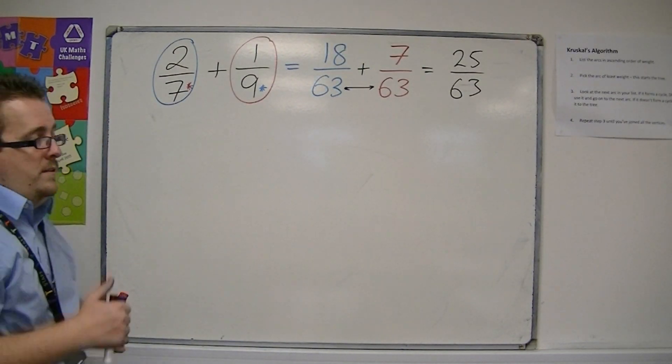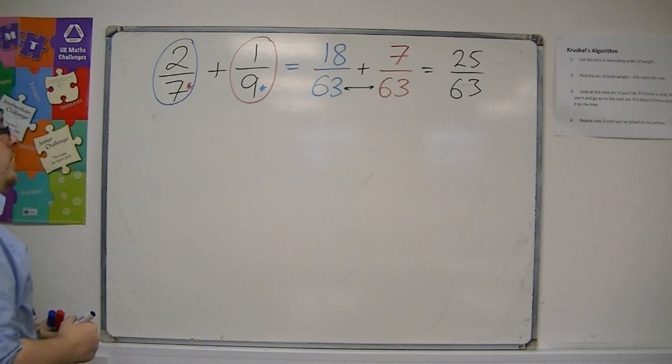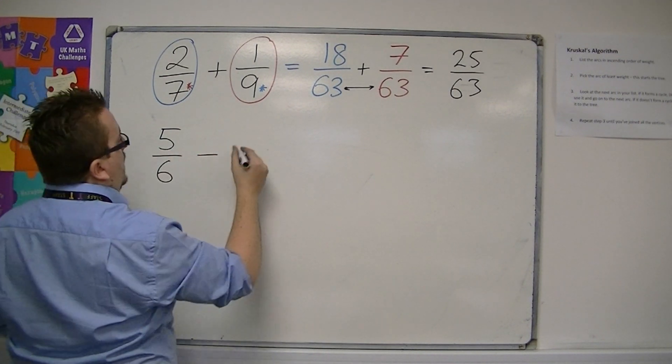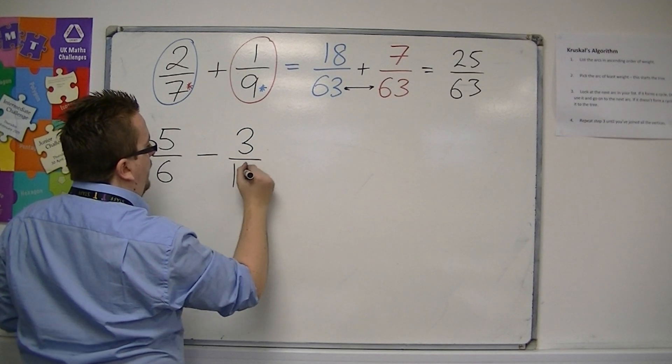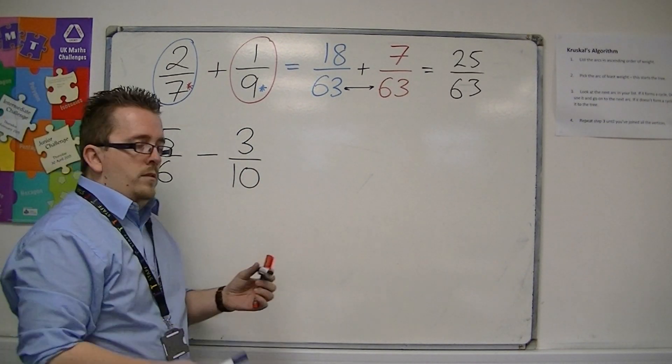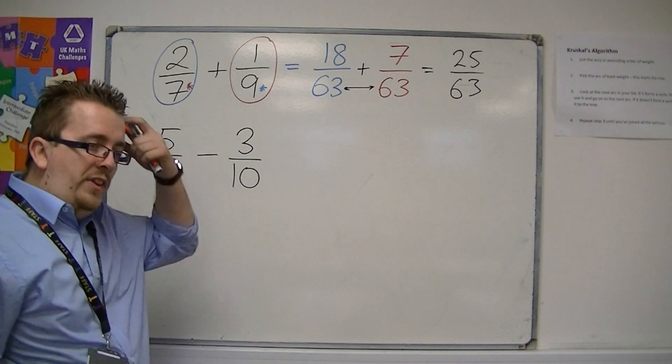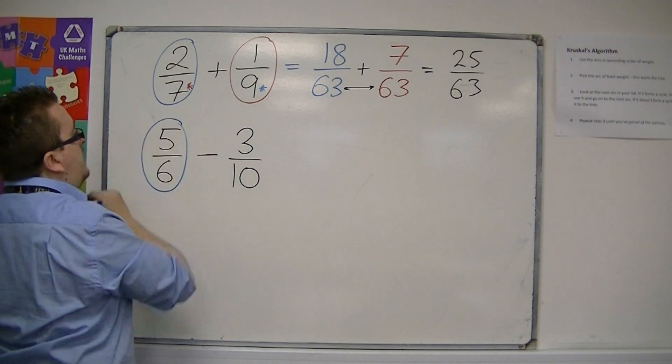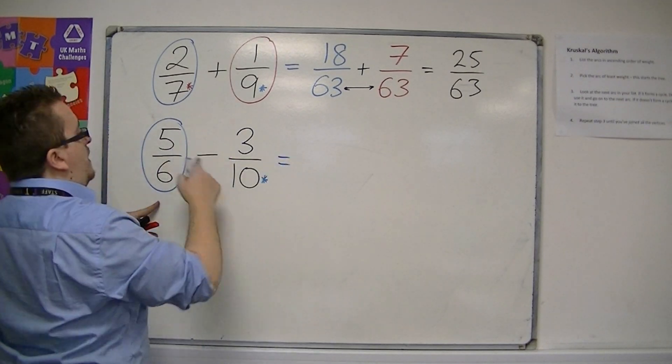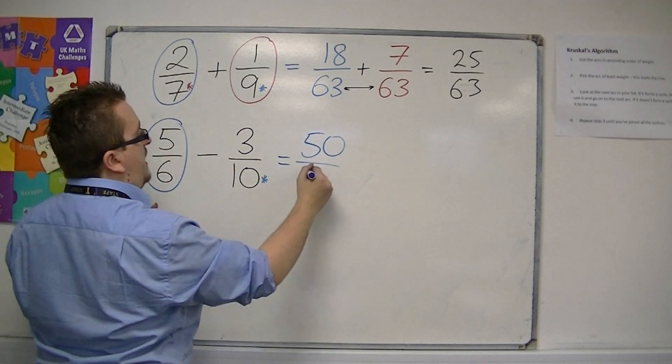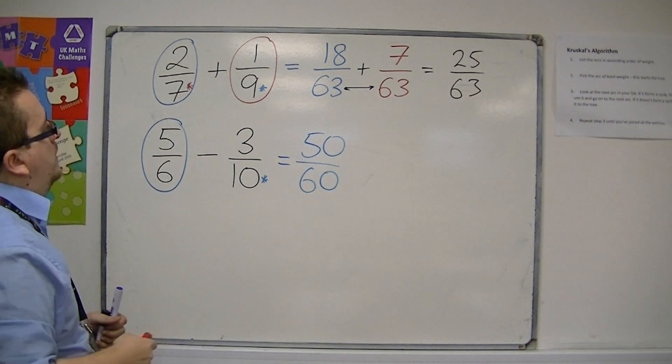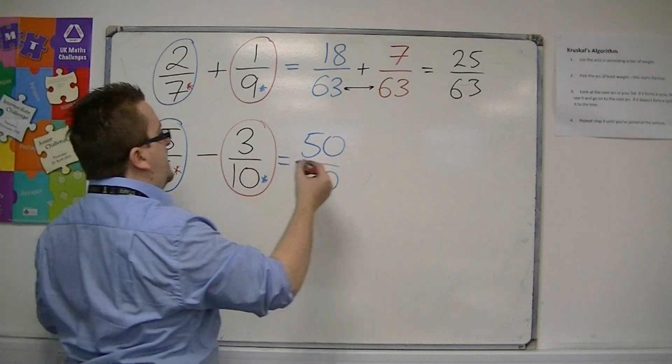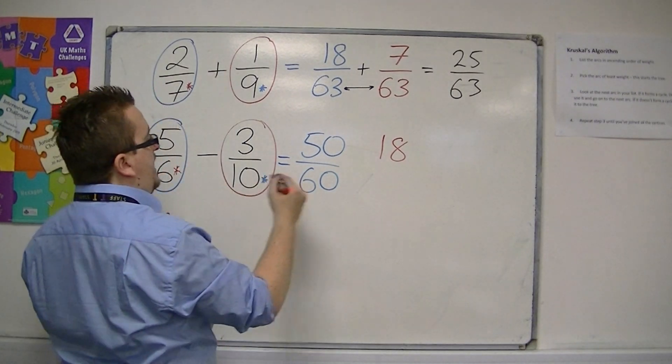So if I started off with another example, let's say I've got 5 sixths and I want to take away 3 tenths. Then I notice that 6 and 10 is not going to be easy, so I would have to multiply both. So I'm going to multiply 5 and 6 by the 10. So 5 times 10 is 50, and 6 times 10 is 60. I'm going to multiply both the 3 and the 10 by the 6. So 3 times 6 is 18, and 10 times 6 is 60.